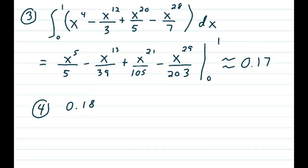And using the power rule, we get x to the 5th over 5 minus x to the 13th over 39 plus x to the 21st over 105 minus x to the 29th over 203. Evaluate that from 0 to 1, and we get 0.17.